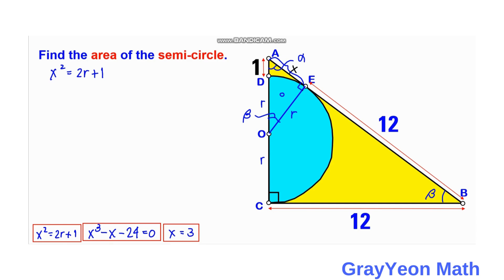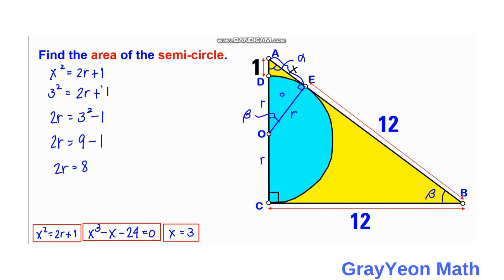Going back to the first equation, x² = 2R + 1, and substituting x = 3: 3² = 2R + 1, so 9 = 2R + 1. Subtracting 1 from both sides: 2R = 8. Dividing both sides by 2 gives R = 4 units.